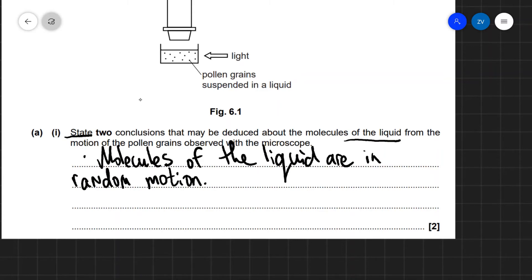Why we know that, just explaining this a little bit further, is because if the pollen grains are moving in a random motion, that means the molecules of the liquid must also be moving in a random motion, even though we can't see them.